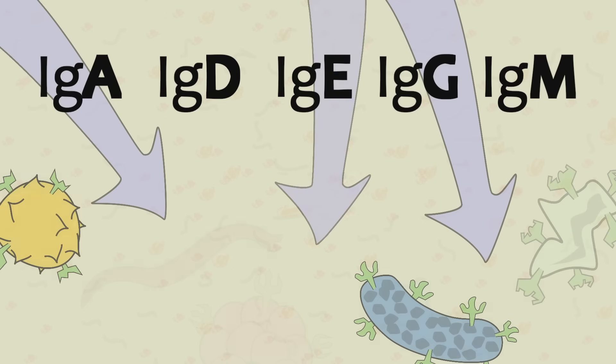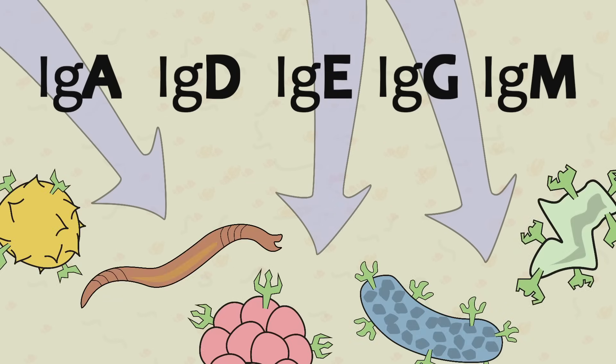Immunoglobulins come in five basic types: IgA, IgD, IgE, IgG, and IgM. Each type targets a specific type of antigen, which determines the Y-chain structure of each type of Ig.